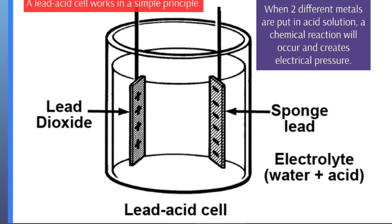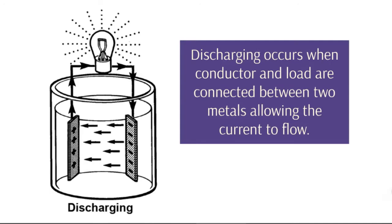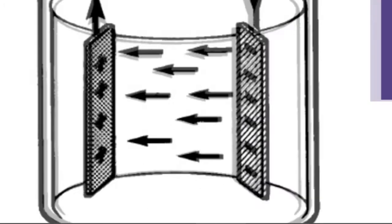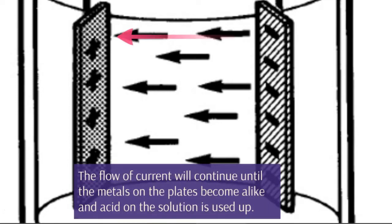These two metals are lead dioxide and sponge lead. Discharging occurs when a conductor and load are connected between the two metals, allowing the current to flow. The flow of current will continue until the metals on the plates become alike.